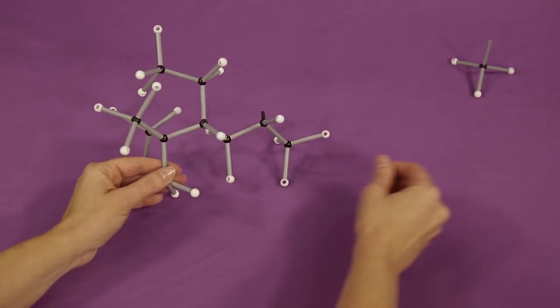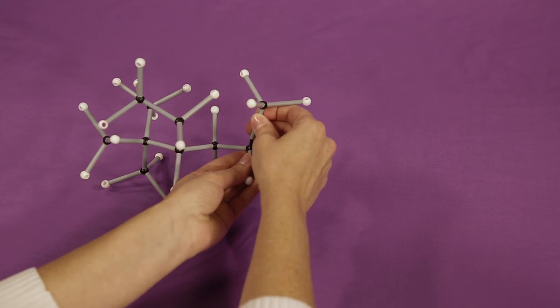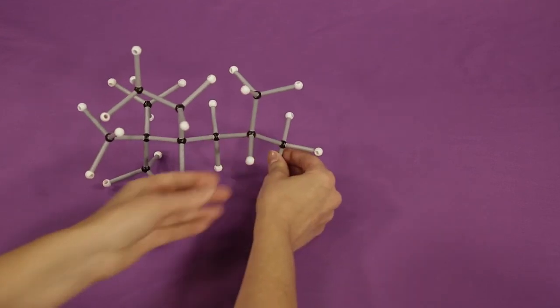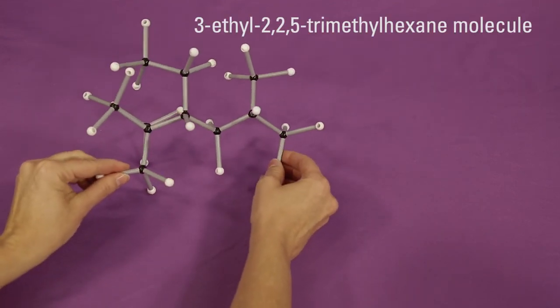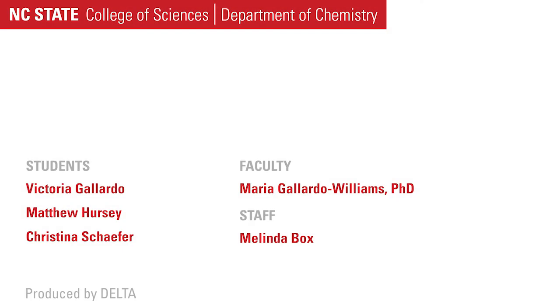Attach the third methyl group to carbon five. The finished product is a 3-ethyl-2,2,5-trimethylhexane molecule.